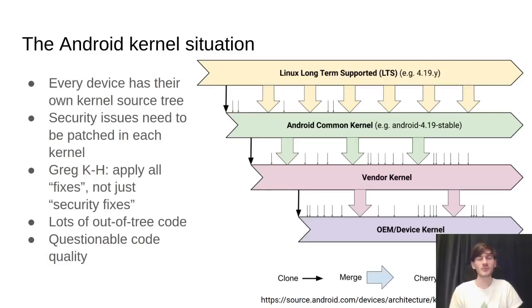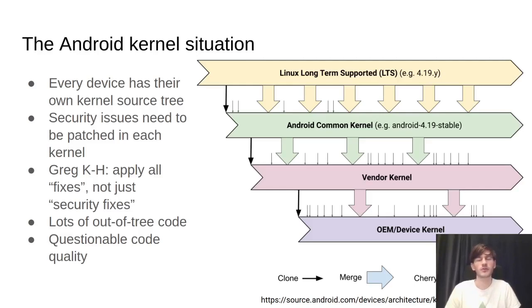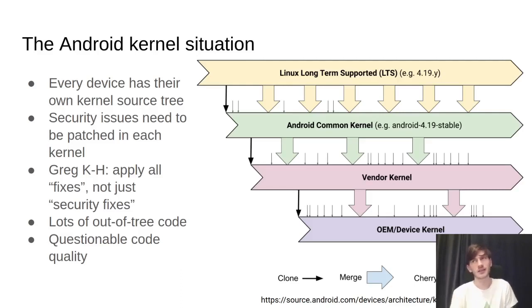To start with the current situation - on the right you can see a graph of how kernel development works in the normal Android market. It starts off from Linux mainline, then a particular kernel version gets branched into the Linux long-term supported release, for example the 4.19 release. This gets modified by Google in the so-called Android common kernel, which then gets modified by the SoC manufacturer, for example Qualcomm or MediaTek, who add SoC-specific drivers on top.